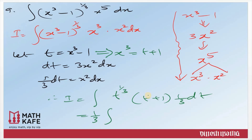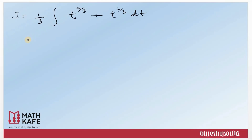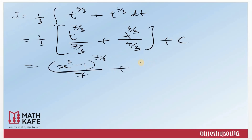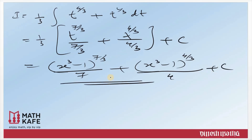Integrating: (1/3)[t^(4/3+1)/(4/3+1) + t^(1/3+1)/(1/3+1)] + c = (1/3)[t^(7/3)/(7/3) + t^(4/3)/(4/3)] + c. Simplifying — the 3s cancel — and replacing t = x³−1: I = (x³−1)^(7/3)/7 + (x³−1)^(4/3)/4 + c. Please practice similar questions type-wise to make integration easier and simpler.